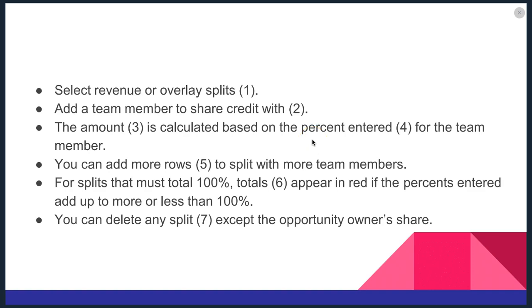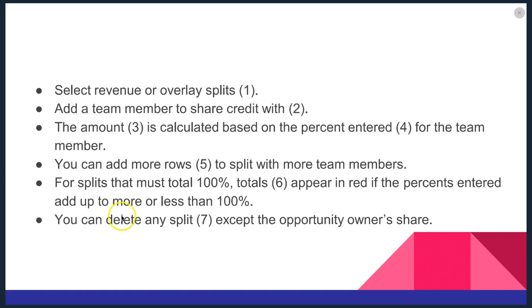What are the steps? First, you select the revenue or the overlay splits. You add a team member to share the credit with. The amount is calculated based on the percent entered for the team member. You can add more rows to split with more team members. For splits, it must total 100%, and the total appears in red if the percents entered add up to more or less than 100%. You can delete any split except the opportunity owner's share.